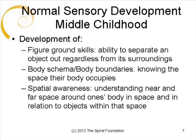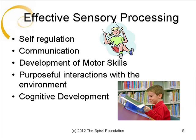Figure ground skills allow us to separate an object from its surroundings, such as finding a pen in a drawer. Increased development of body schema allows a child to develop an internal sense of his or her own body boundaries and body image. As a child experiences movement of the body through space, he or she develops spatial awareness. This awareness of body and space allows the child to understand where they are in relation to objects around them. When our bodies process sensory information effectively, we are able to find ways to self-regulate, which allows us to stay organized during structured and unstructured tasks. We are also able to adapt to changes in routines, attend to complete a task, and monitor our behavior within the context of a situation or environment effectively. Sensory processing also allows us to communicate efficiently. Sensory processing is important in the development of motor skills and our ability to interact in purposeful ways with the environment.